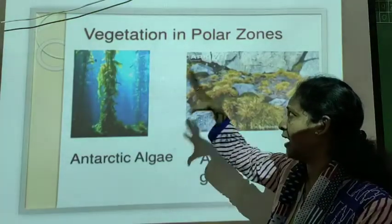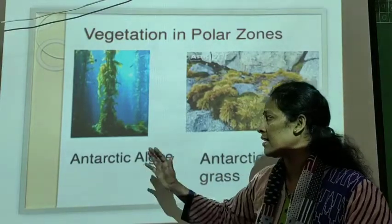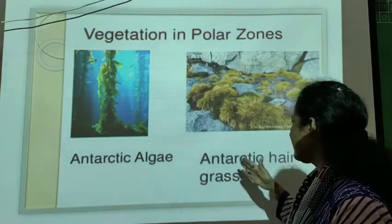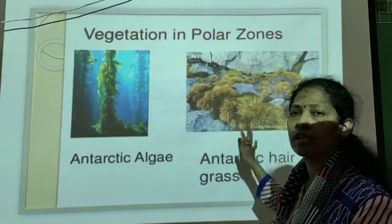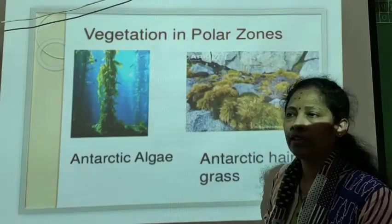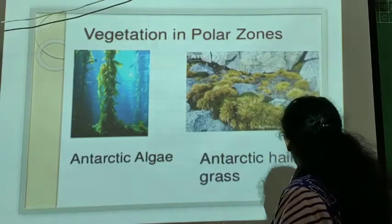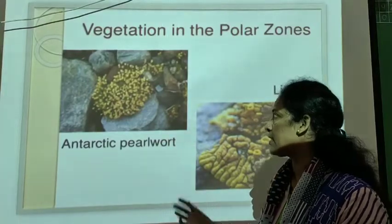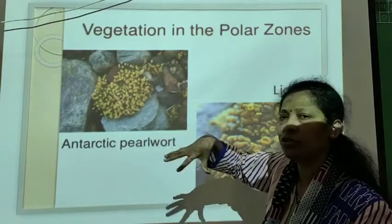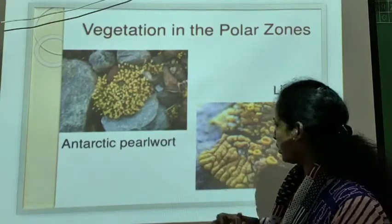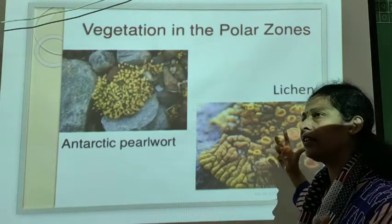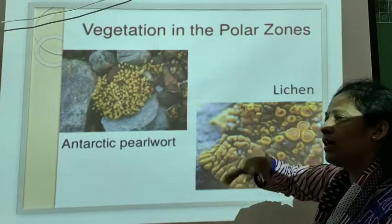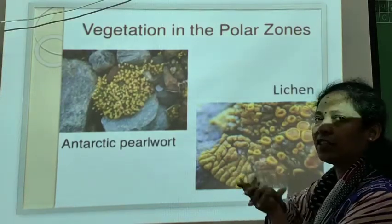This is the vegetation in polar regions. One type is Antarctic algae, which grows in the Antarctic region. Then there is Antarctic hair grass — it looks like hair and grows in the Antarctic region. Also the Antarctic pearlwort, which also grows in the Antarctic region and can grow on stones wherever it finds a base. Another plant grows at ground level and sticks with the surface.